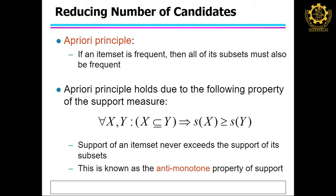Some rules will not be valid because we have a confidence threshold as well as a minimum support. We then talk about the Apriori principle. The basic idea of the Apriori principle is: if an itemset is frequent, then all of its subsets must also be frequent. This can be written in a more formal mathematical way. Suppose you have two itemsets X and Y, which are subsets of the power set of all items, 2 to the power D. If X is a subset of Y, then the support of X is always greater than or equal to the support of Y.